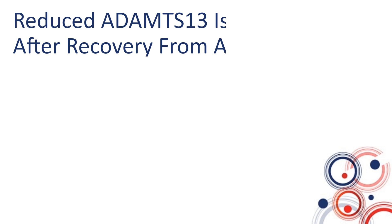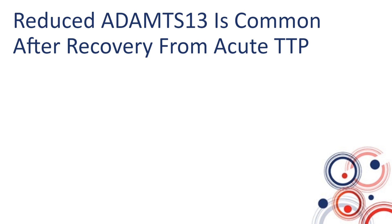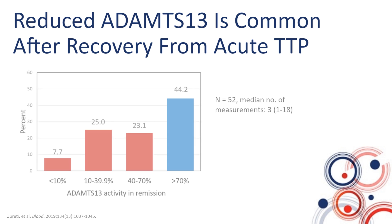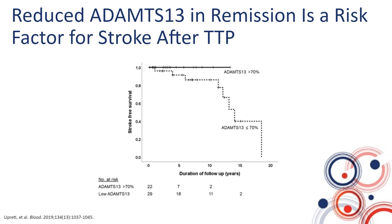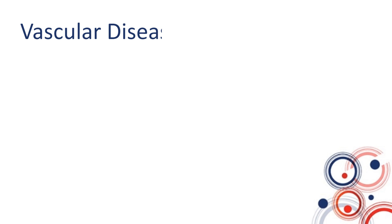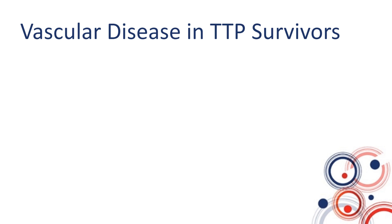In patients with TTP, less than half recover ADAMTS13 activity into the normal range. Data from a study following ADAMTS13 measurements during remission showed that the majority of patients have activities ranging between 10 to 70%, measured only after 30 days from recovering from an acute episode, and this was prior to the era of preemptive rituximab. In the same study, having reduced ADAMTS13 activity less than 70% was significantly associated with the rate of stroke.